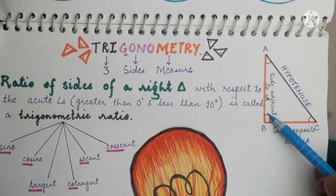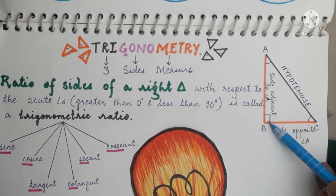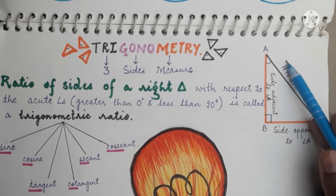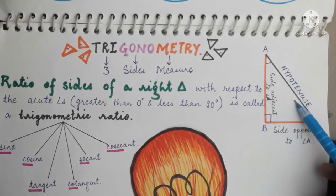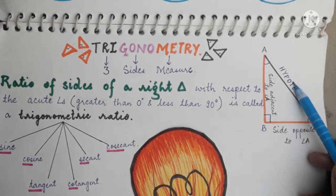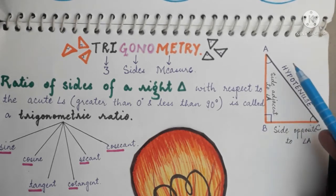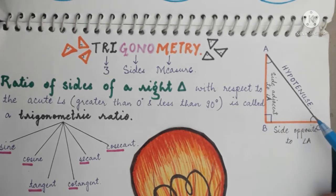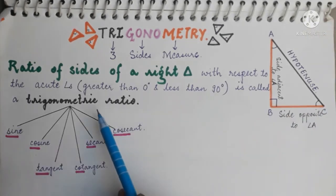What is the hypotenuse? The hypotenuse is the side of a right triangle which is opposite to the right angle. One more important point: the hypotenuse is the longest side of a right triangle.